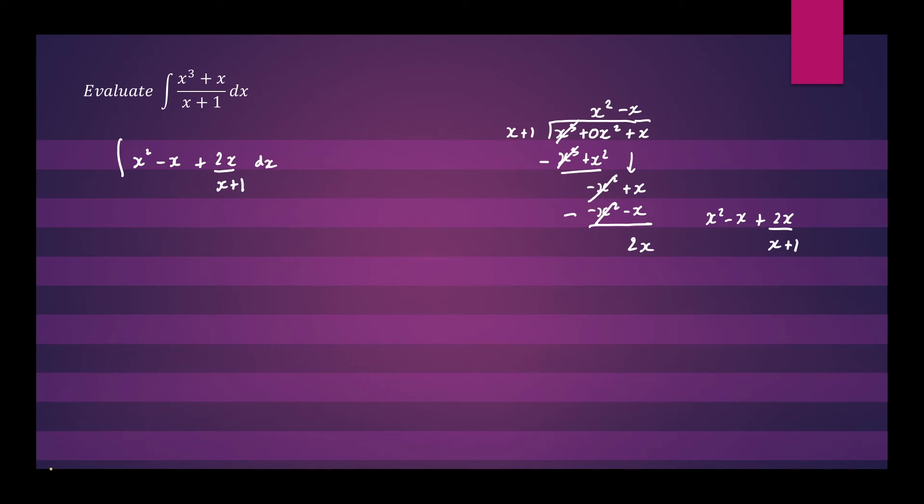Let's try another division on our last expression here. So let's divide x plus 1 into 2x. So that will give us 2. 2 times x is 2x. And 2 times 1 is 2. When we subtract, we have 2x minus 2x, which is 0. And there's actually a 0 we can write there. So 0 minus 2 is negative 2.